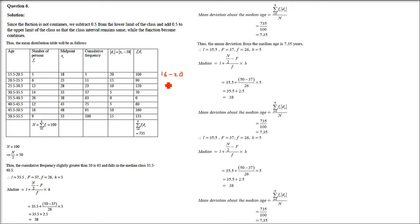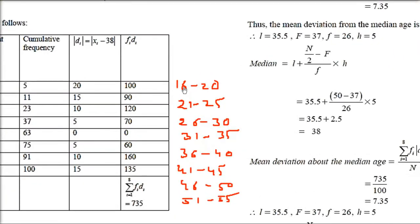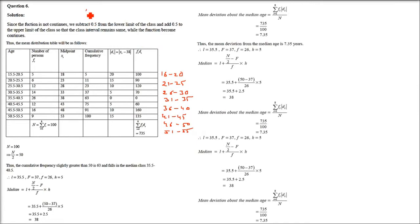The given age classes are: 16–20 (f=5), 21–25 (f=6), 26–30 (f=12), 31–35 (f=14), 36–40 (f=26), 41–45 (f=12), 46–50 (f=16), 51–55 (f=9). The problem is there's a break between classes — e.g., between 20 and 21 there is no data, so this is not a continuous range.